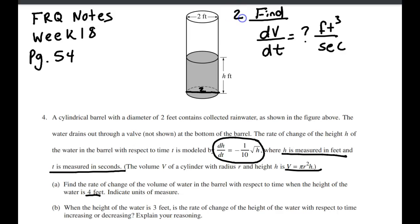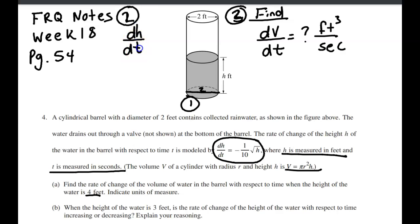This is actually step 2 when we do these types of questions, because hopefully you guys are recognizing this is a related rate question. Step 1 is to draw a picture, but they've already given us that. Step 2 is to write down the given rate, which they gave us as dH/dt. And that's equal to negative one tenth times the square root of H. So we have our picture, we have our given rate, we have the rate we want to find. Step 4 is to do our formula, and we need a formula that connects V and H.